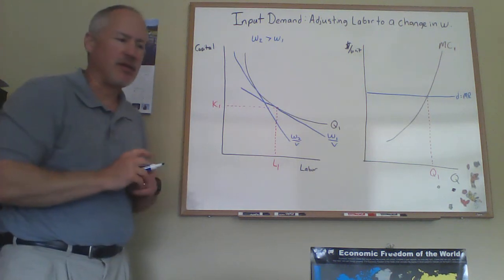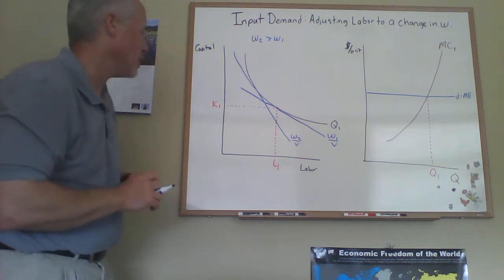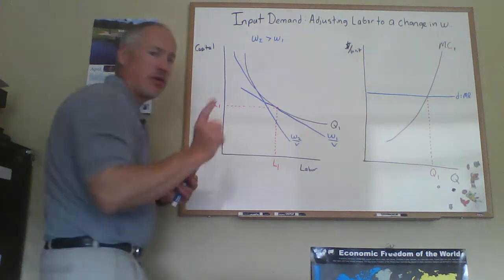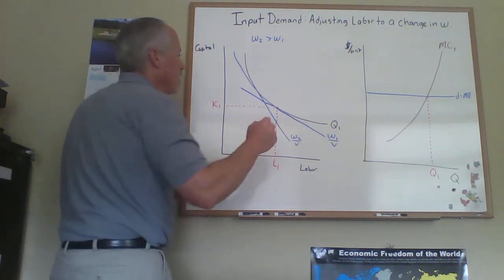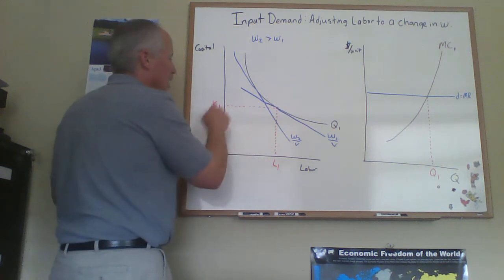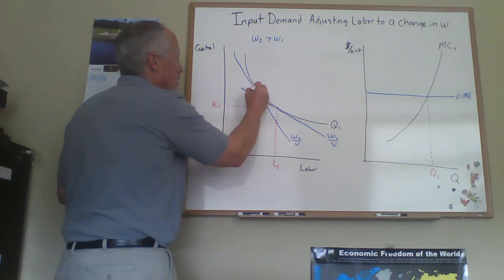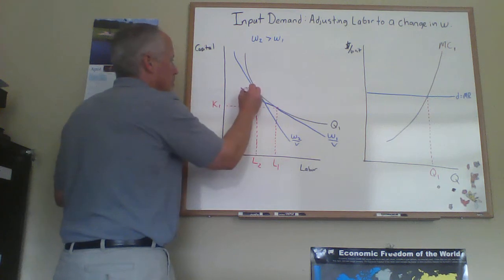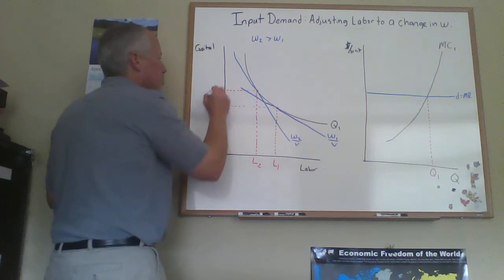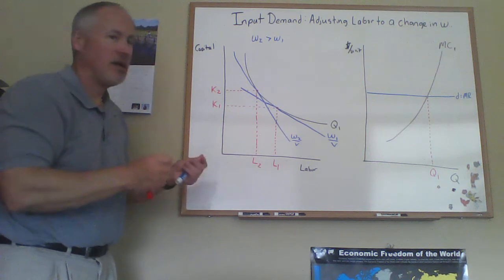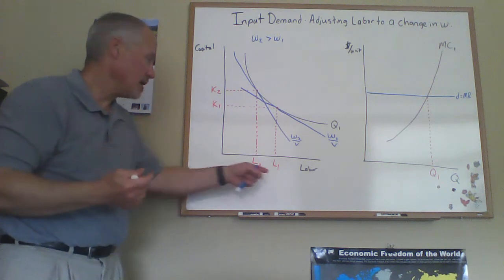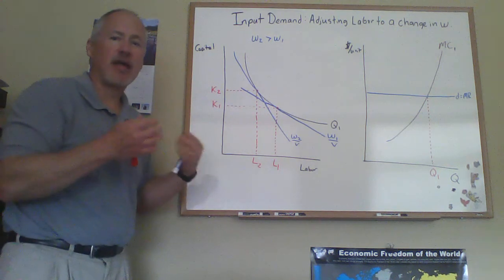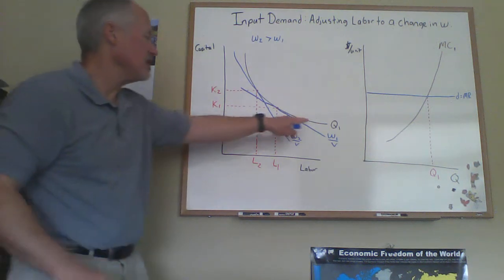This is the same thing that I have in my notes for Chapter 13 that I posted. So this firm would, if they were going to continue to produce Q1 units of the good, they would shift from producing it using L1 and K1 to using a combination of labor and capital. So the wage of labor goes up, so probably not surprisingly, the firm would use less labor and more capital. They would substitute capital for labor in the production of a given amount of output.